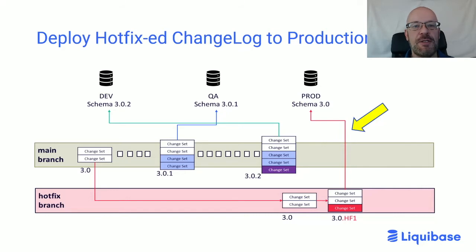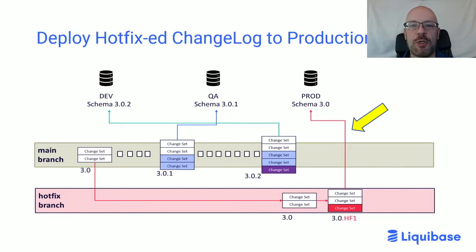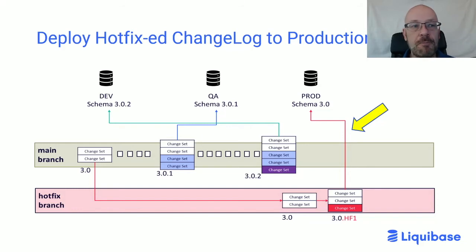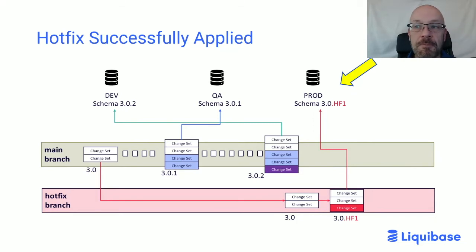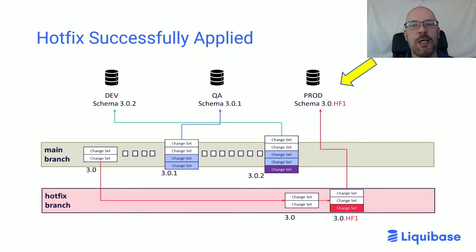Since I know that everything that was in production is already in that change log, that's safe — nothing's going to happen there. I'm just going to deploy. The only changes that are going to be deployed are the new ones, and it's going to upgrade the production schema version to the hotfix version of the schema. At this point, the fire's out. I know what's in production, I know what changes have been put in production, and everything is good.